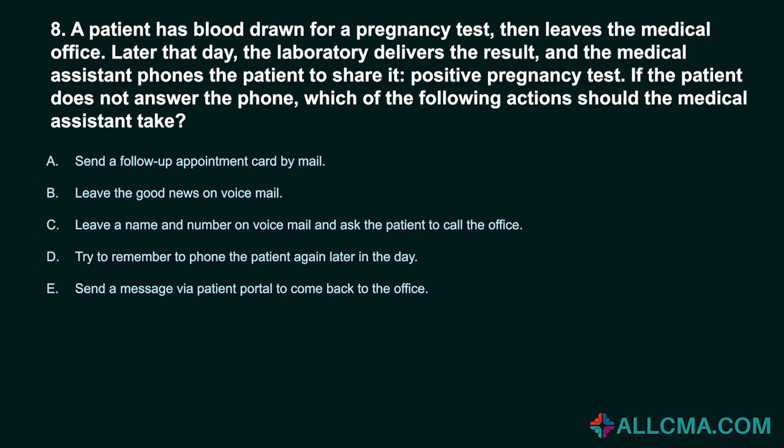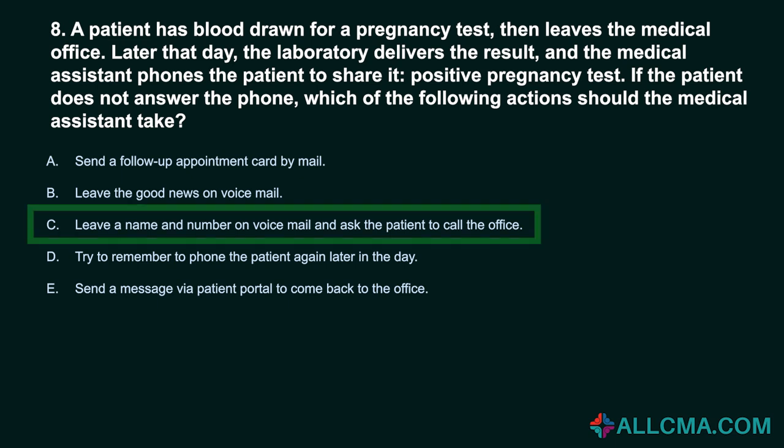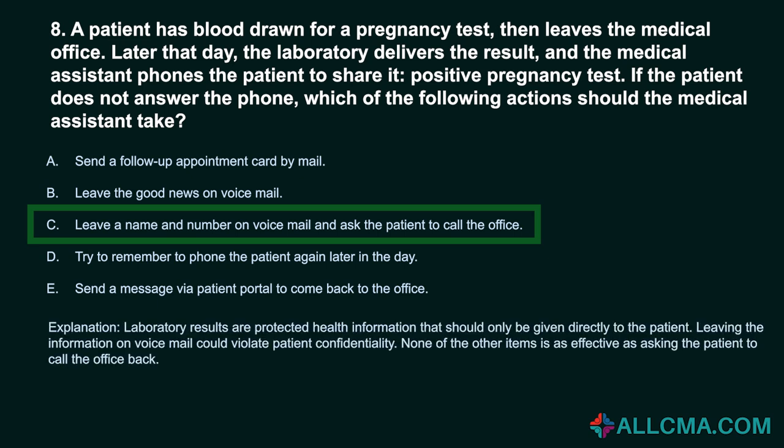Question 8: A patient has blood drawn for a pregnancy test, then leaves the medical office. Later that day the laboratory delivers the result, and the medical assistant phones the patient to share a positive pregnancy test. If the patient does not answer the phone, which action should the medical assistant take? A. Send a follow-up appointment card by mail. B. Leave the good news on voicemail. C. Leave a name and number on voicemail and ask the patient to call the office. D. Try to remember to phone the patient again later in the day. E. Send a message via patient portal to come back to the office. Correct answer: C. Leave a name and number on voicemail and ask the patient to call the office. Laboratory results are protected health information that should only be given directly to the patient. Leaving the information on voicemail could violate patient confidentiality.